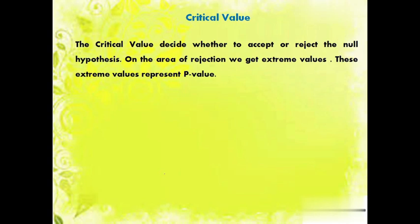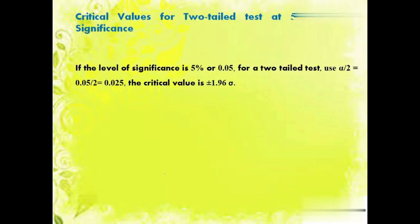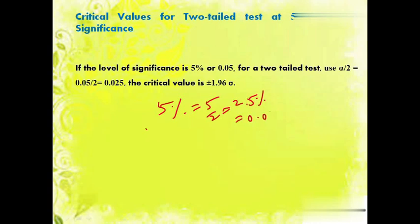On the area of rejection we get extreme values, and these extreme values represent critical values. For a two-tailed test at 5% level of significance, if the level of significance is 5% or 0.05, we use alpha by two. Alpha by two: suppose 5% is the level of significance, then we divide 5 by 2, which gives 2.5. Two point five percent is equal to 0.025. In a two-tailed test, alpha by two is taken and it contains two tails — both right as well as left.